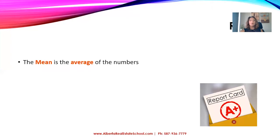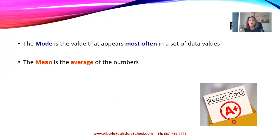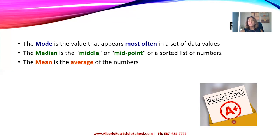To recap, there are three numbers we looked at. Mean is the average of the numbers. Mode is the value that appears most often in the set of data values. And median is the middle or midpoint of a sorted list of numbers. For real estate: mode is the value properties sell for most often in a neighborhood; median is the midpoint of sale prices; and mean is the average of house prices.